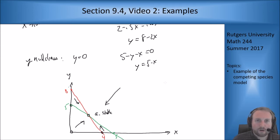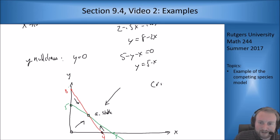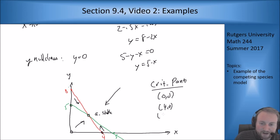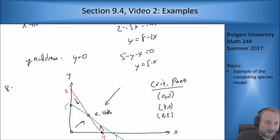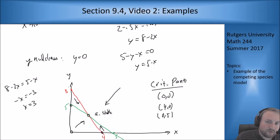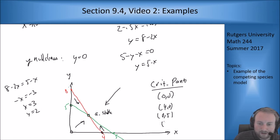What are our critical points? We need to know that before we start doing the Jacobian analysis. Our critical points are the origin, (4, 0) at the bottom, (0, 5), and then the intersection point of the two lines. Finding the intersection: 8 minus 2x equals 5 minus x gives negative x equals negative 3, so x equals 3 and y equals 2. So the intersection point is (3, 2).